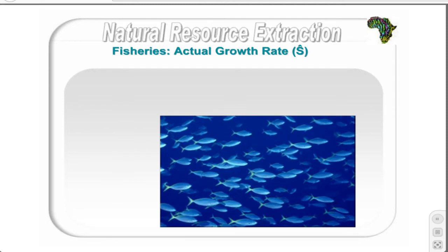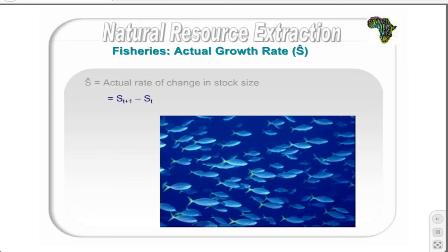Introducing fisheries to the population growth model implies a distinction between the natural growth rate G and the actual growth rate Ŝ, which is the actual rate of change in the resource stock taking into account mortality due to harvesting. The actual growth rate equals the difference in stock size between one time period and the next. If there is no harvesting, then Ŝ equals G. However, if the resource is harvested, the actual growth rate differs from the natural growth rate by the harvest rate — that is, Ŝ equals G less the catch rate.